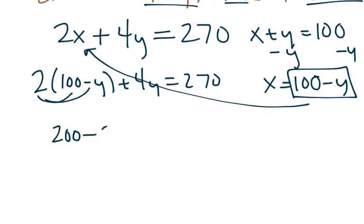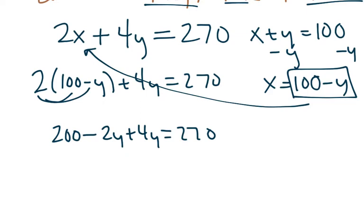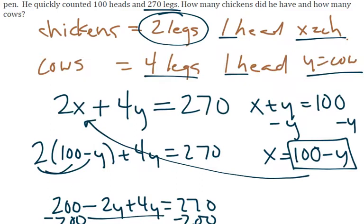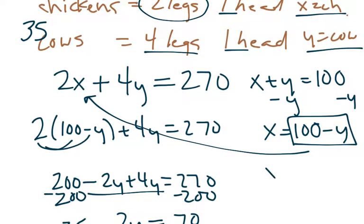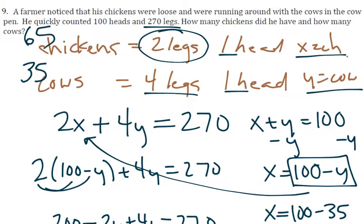Simplify that: 200 + 2y = 270. Subtract 200, we get 2y = 70. Divide by 2, so y = 35. That tells us we have 35 cows. To find the number of chickens, just go 100 minus 35, which gives us 65 chickens.